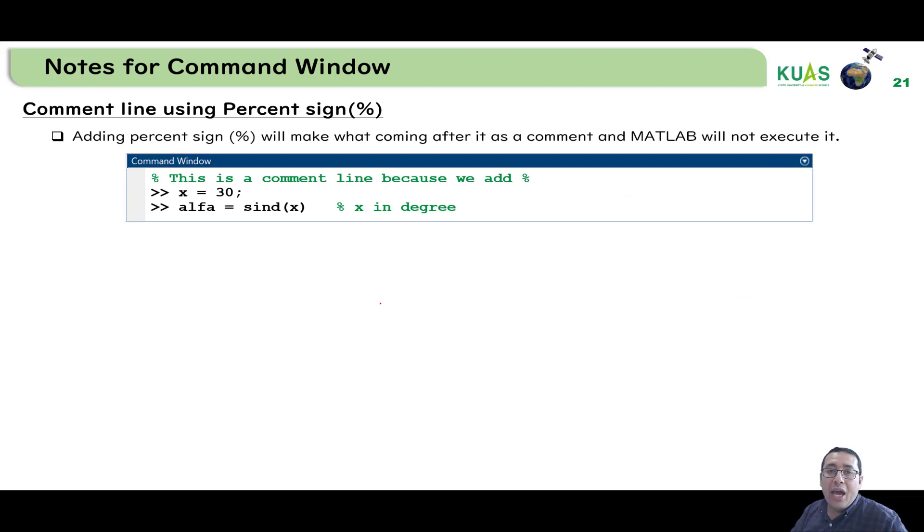The next note is how to write a comment. Using comments is very important because sometimes we write that long code and we need to give some description for each part of that code, or we need to memorize why we do this step, something like that. Or when we distribute the code to others, they can understand. Just adding percent sign will make anything come after that a comment. So MATLAB will not read it and will not execute it. For example, if we write percentage sign and then this is a comment line because we add percent sign. So this is just for us. We just define that, and MATLAB will not care about that. And then, for example, if we write x equals 30, and then alpha is equal to sind of x, and we need to put the comment that, please note that x is in degrees, we just use that percentage sign. So no problem for that. Let's check that on MATLAB.